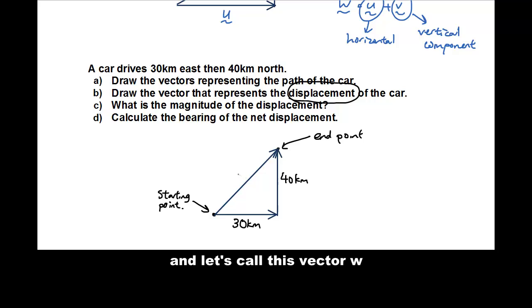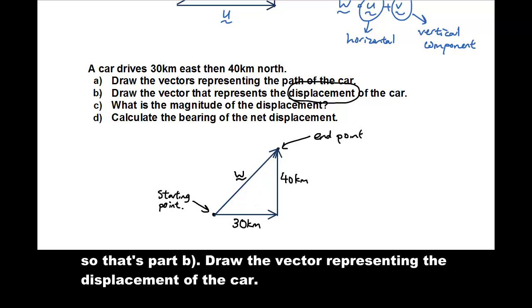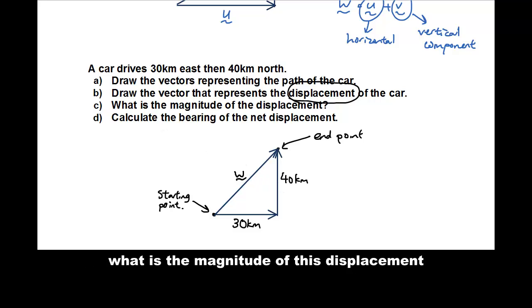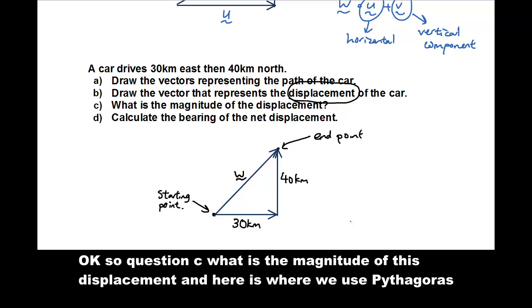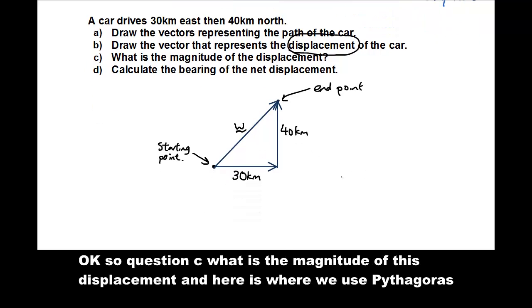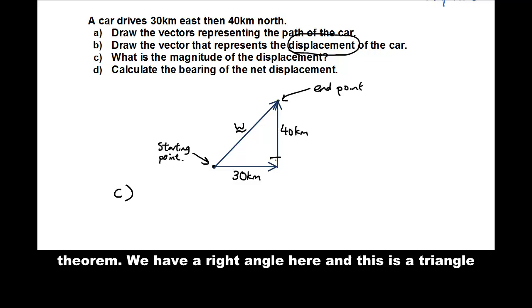So let's draw the vector that represents the displacement of the car. And let's call this vector W. And that's part B. Draw the vector that represents the displacement of the car. So that's vector W. What is the magnitude of this displacement? Okay, so question C.